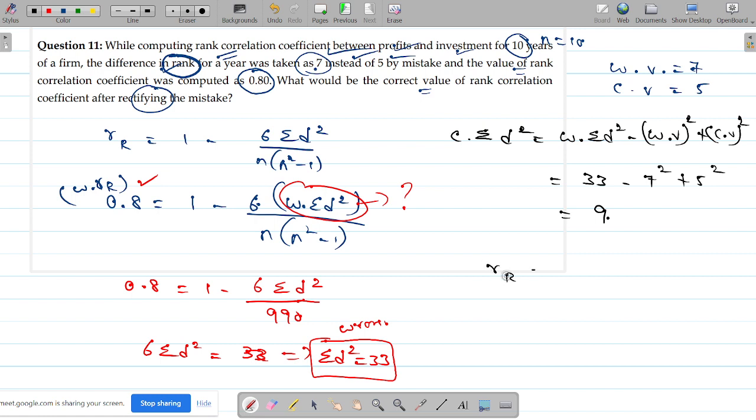Now substitute in RR the formula: 1 minus 6 summation d squared divided by 990. So 1 minus 6 into 9 divided by 990. You get the value 0.95. Please check.